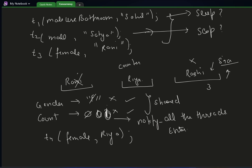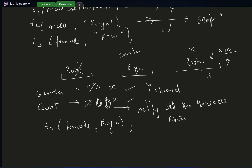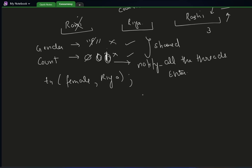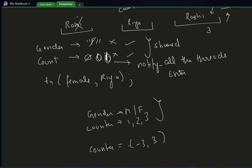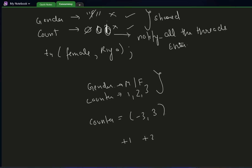Now why do we need to maintain two things? We can simplify by combining gender and counter into a single variable ranging from minus three to plus three. Plus one, plus two, plus three belong to a male; minus one, minus two, minus three belong to a female. If a male comes, counter plus plus; if a female comes, counter minus minus. The minus sign tells you there's a female, the plus sign tells you there's a male.